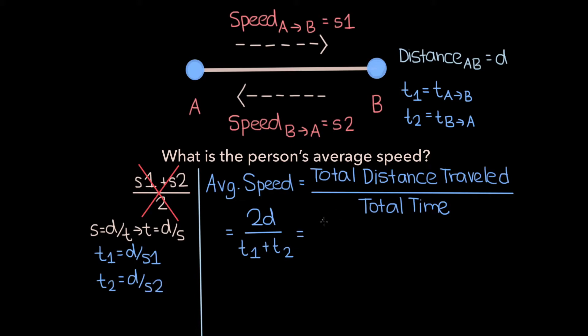Now we can plug this information into the formula on our right and we would get 2D over D over S1 plus D over S2. Now the rest of this proof is fairly algebra heavy and we can start by simplifying the denominator of this fraction a little bit. And we would get 2D over DS2 plus DS1 over S1 S2.